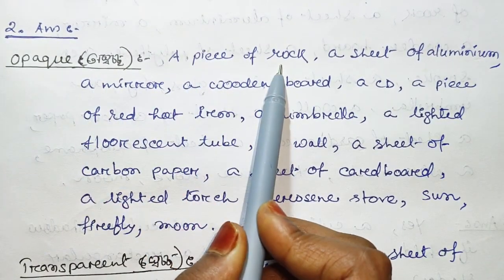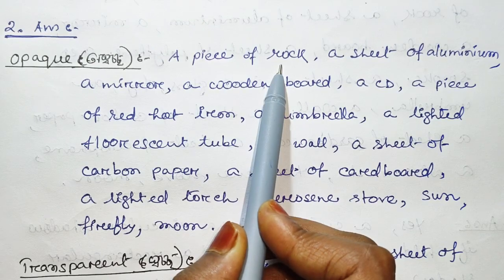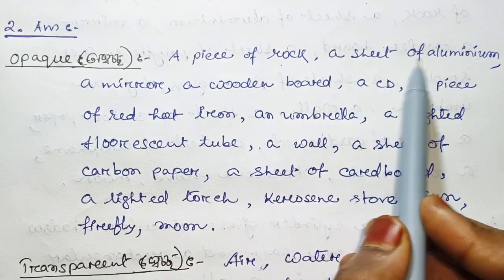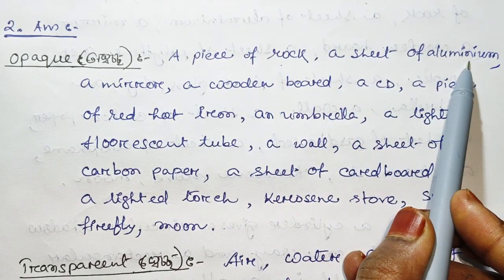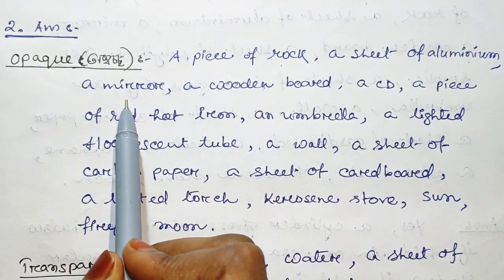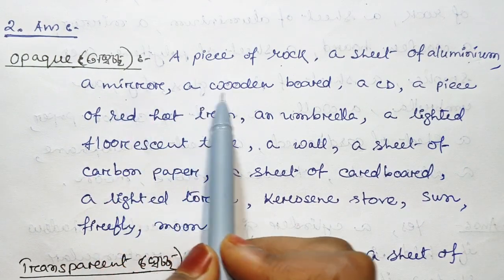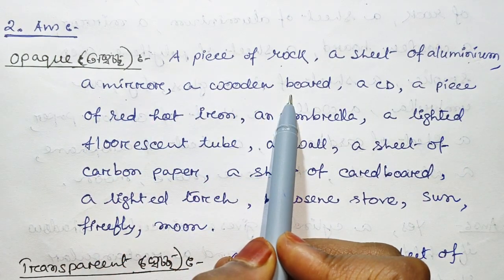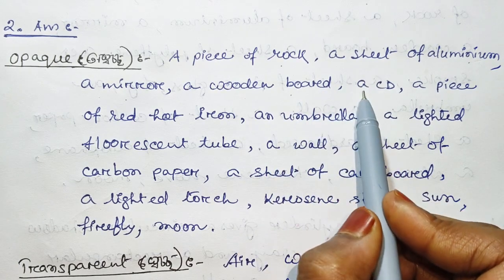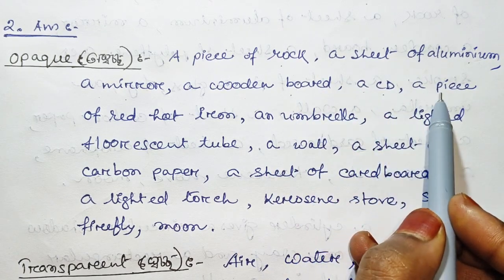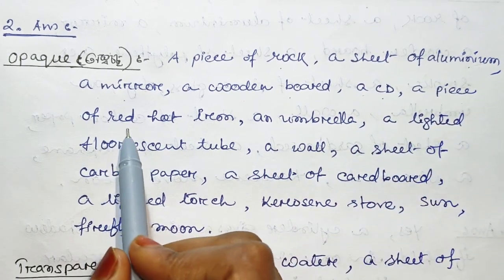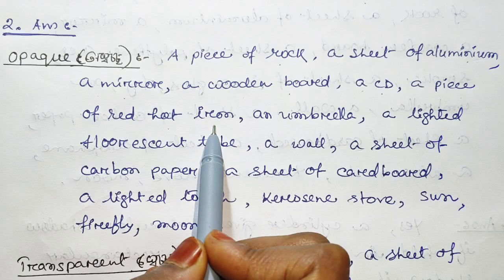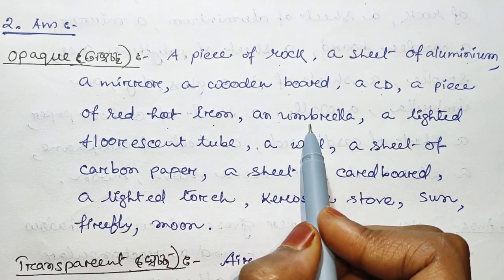The materials listed are: a piece of rock, a sheet of aluminum, a mirror, a wooden board, a CD, and a piece of red-hot iron.